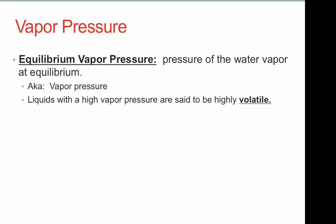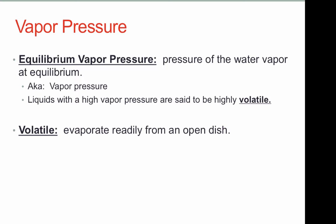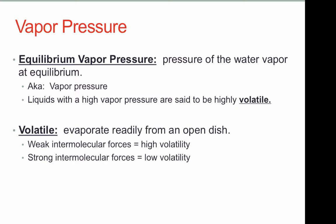With this idea in mind, we can define something called the equilibrium vapor pressure — the pressure of the water vapor at equilibrium, also just called vapor pressure. Liquids with a high vapor pressure are said to be highly volatile; they evaporate easily. Something that evaporates easily will have a lot of molecules in the gas phase once equilibrium is established. Because they're very volatile, they must have weak intermolecular forces, meaning it doesn't take much energy to overcome them. On the other hand, molecules like water with strong intermolecular forces will have very low volatility — they evaporate at a very slow rate and have very low vapor pressures.